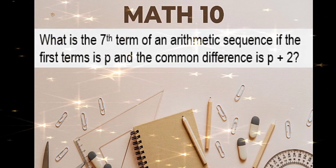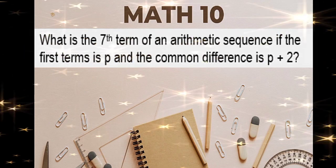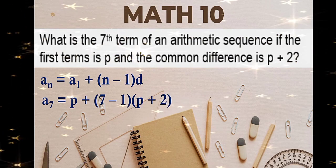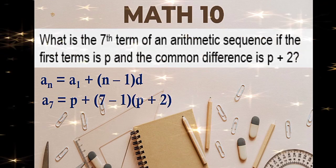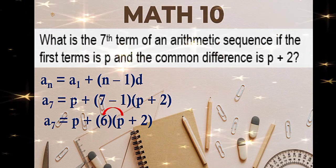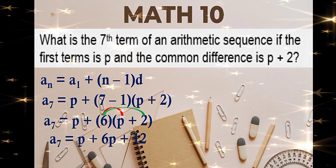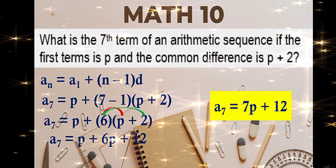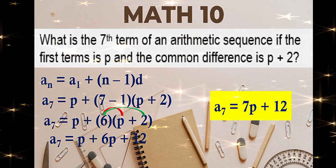What is the seventh term of an arithmetic sequence if the first term is p and the common difference is p plus 2? Substitution using the same formula: n is 7, first term is p, and the common difference is p plus 2. Simplify: 7 minus 1 is 6, then distribute — 6 times p plus 6 times 2. Combine like terms: p plus 6p is 7p. Copy the constant 12. The seventh term of the arithmetic sequence is 7p plus 12.